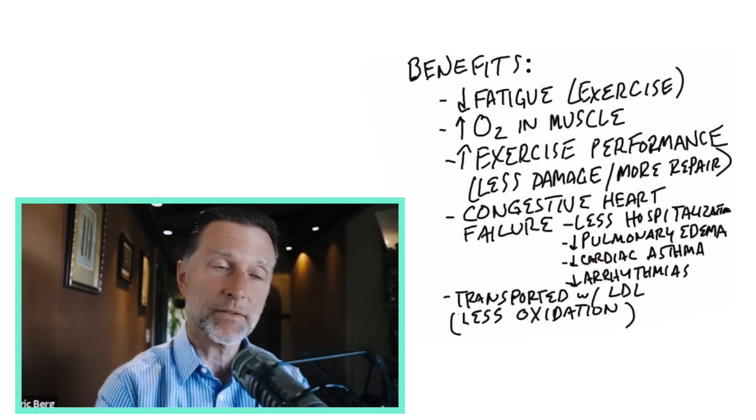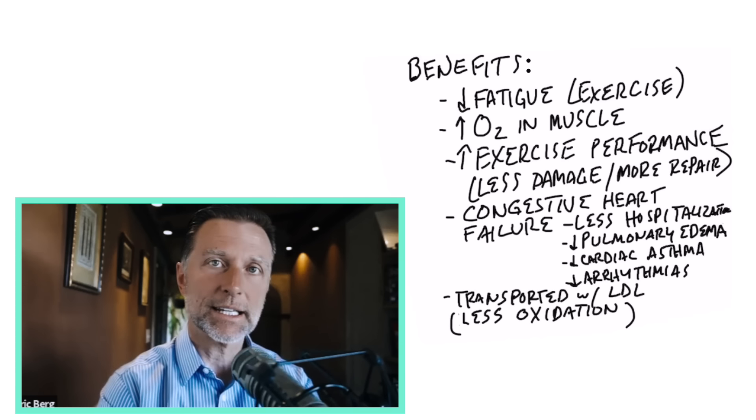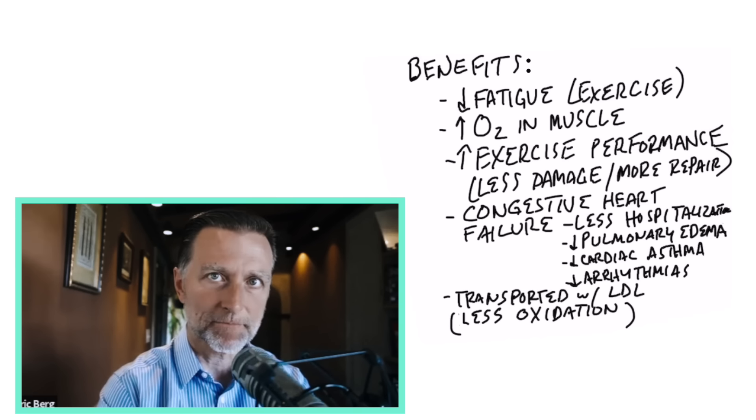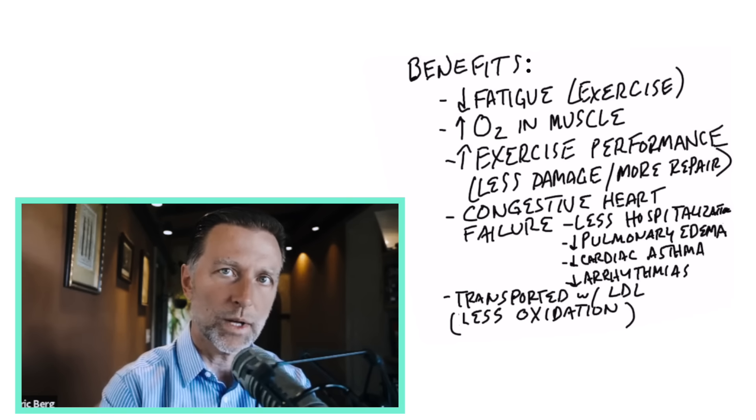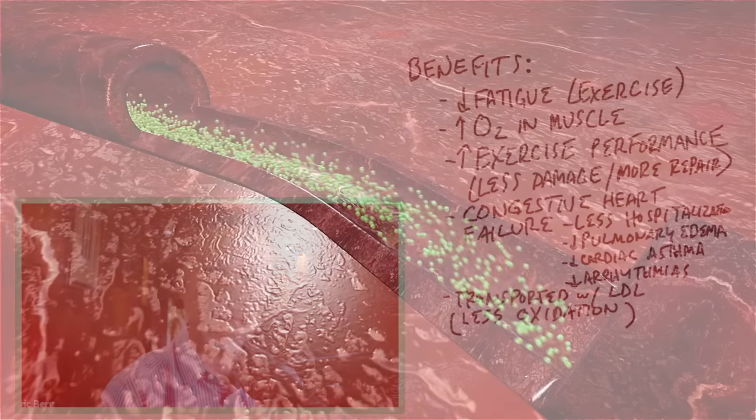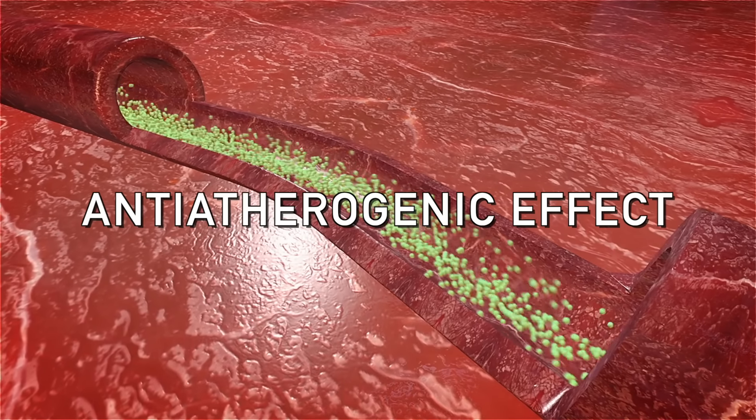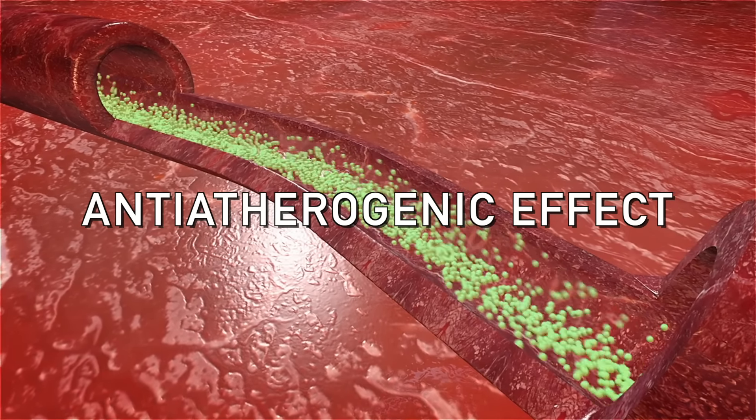Now, another purpose of coenzyme Q10 is its ability to act as an antioxidant. So it prevents the oxidation of LDL. So this is another benefit. It gives you this anti-atherogenic effect. So it supports the arteries. So that's pretty much what coenzyme Q10 does. I mean, it does a lot of other things for your brain, for the different organs. But let's just talk about what food has the most coenzyme Q10.